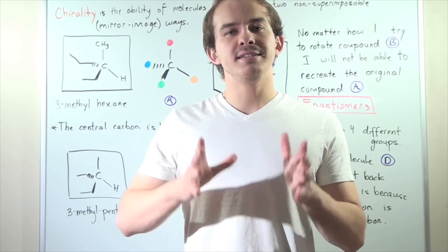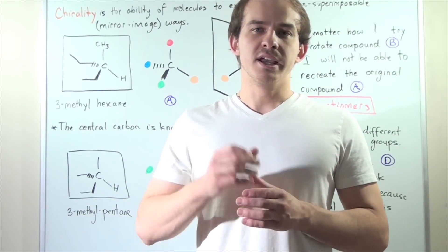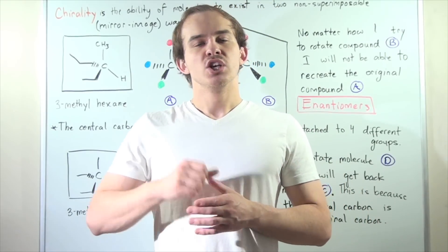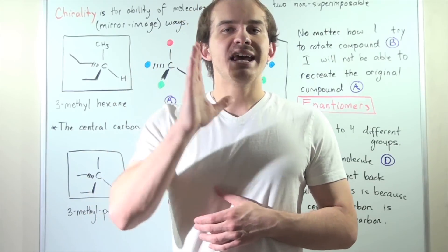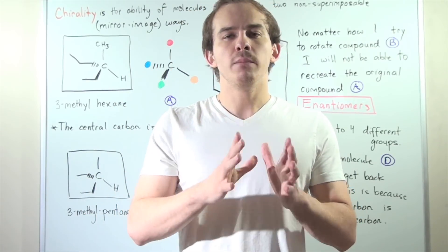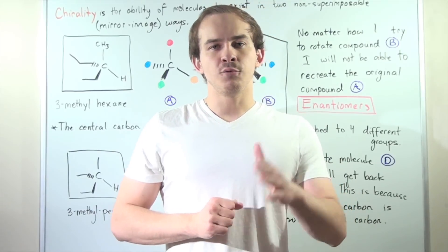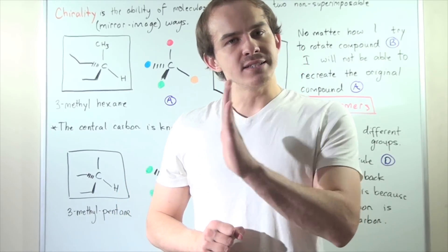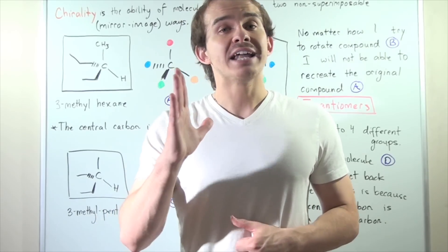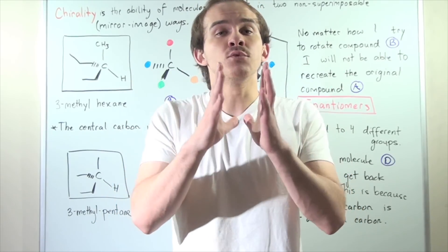Chirality simply means handedness. To demonstrate chirality, let's use our right and left hands as examples. If we take our right hand and place it next to a mirror, the reflection produced will be that of the left hand. Likewise, if we take our left hand and place it next to a mirror, the reflection produced will be that of the right hand. So we call our two hands chiral.